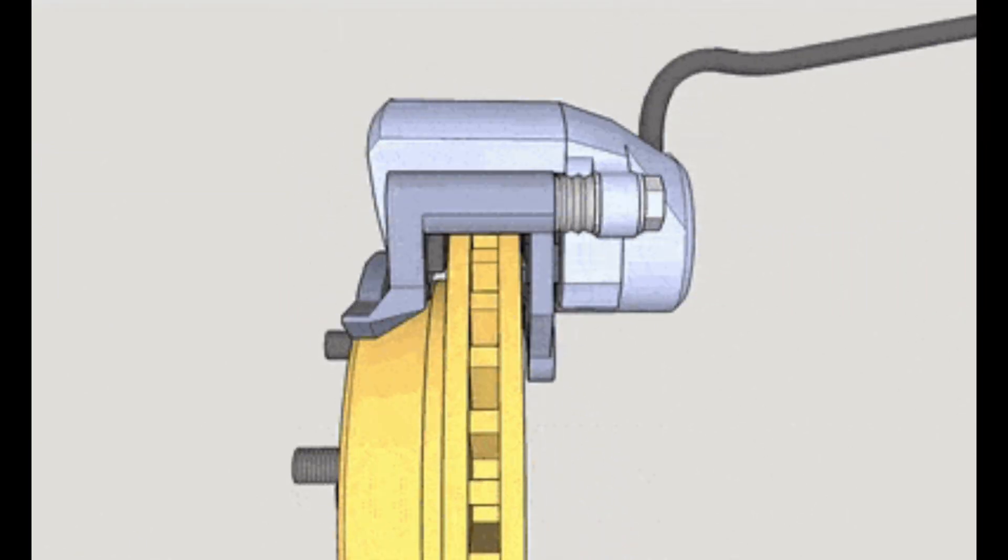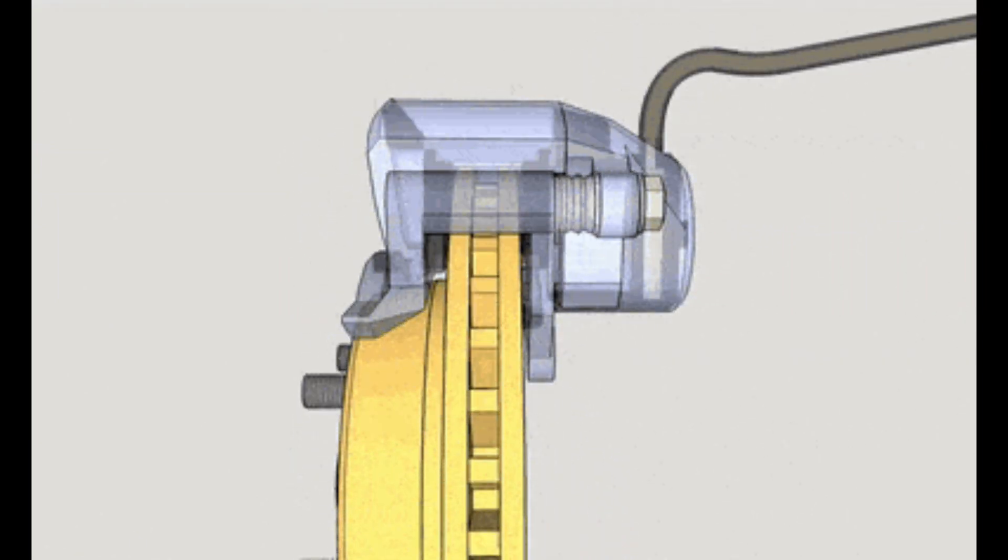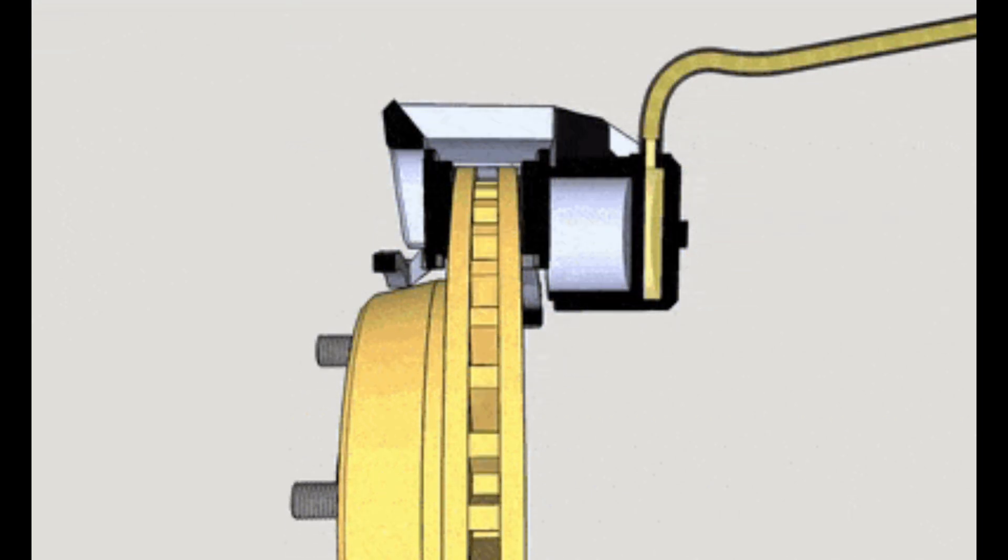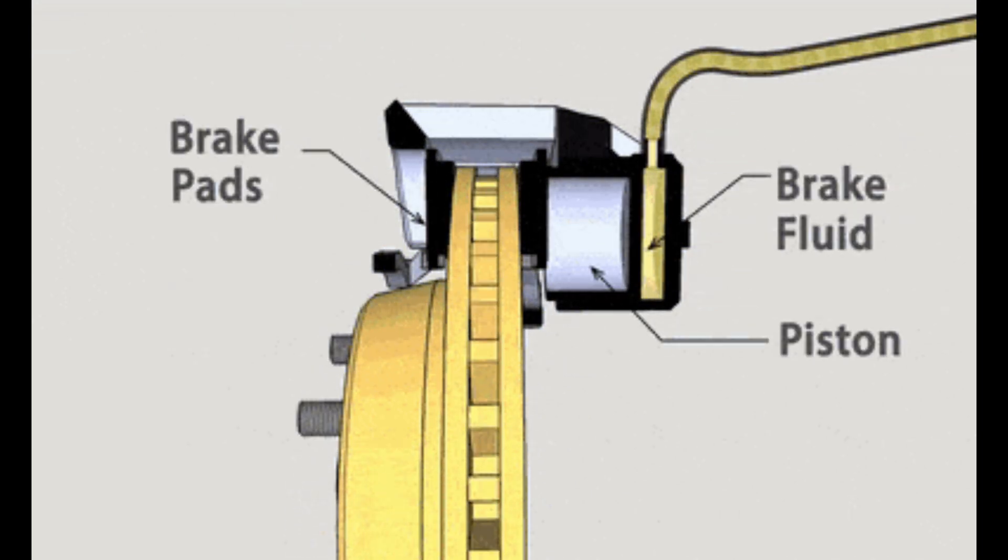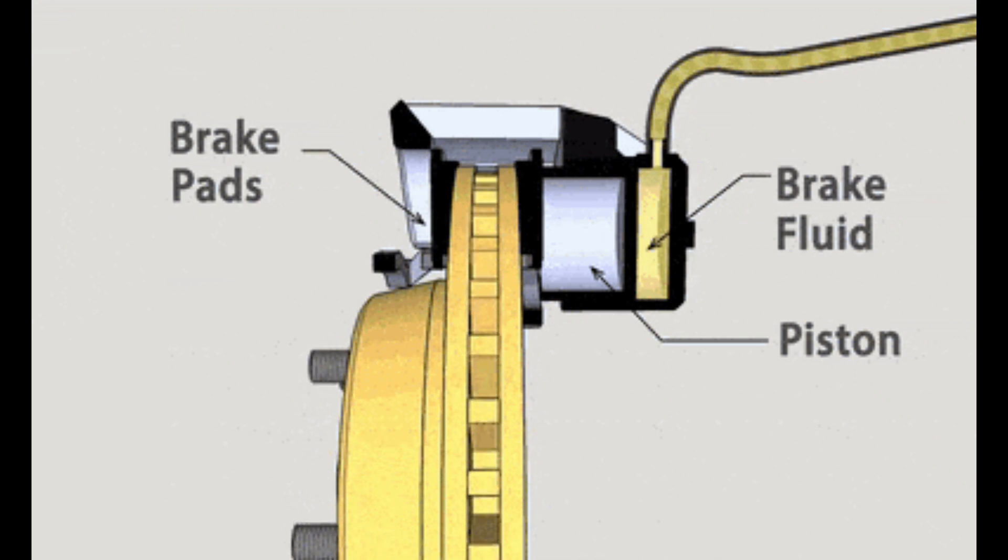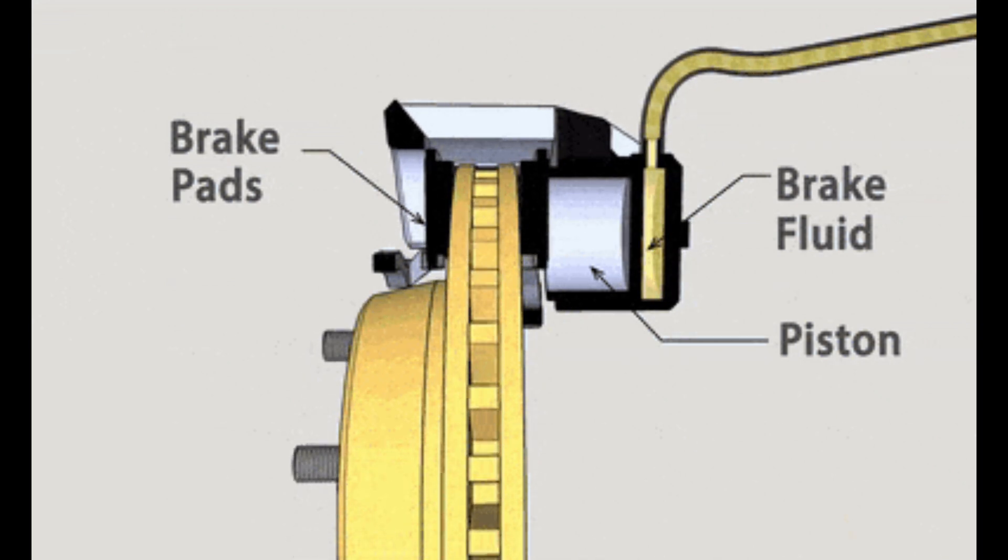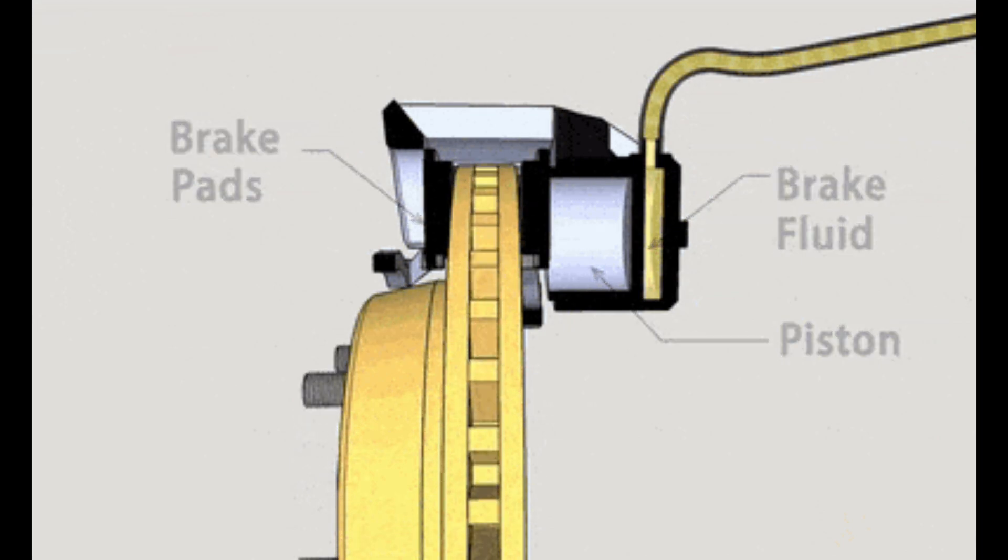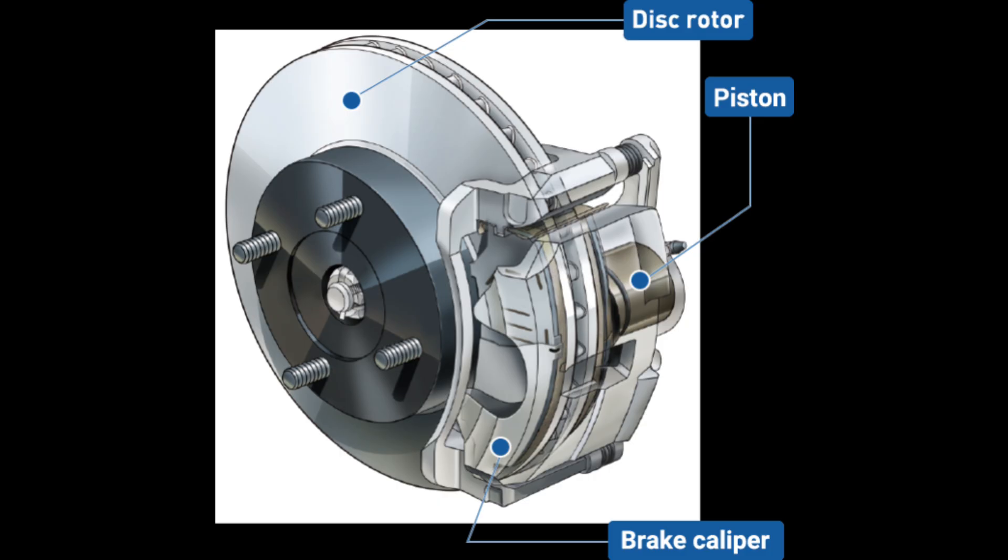How Disc Brakes Work. Disc brake construction: The brake rotor disc, which rotates with the wheel, is clamped by brake pad friction material fitted to the caliper from both sides with pressure from the piston's pressure mechanism, decelerating the disc rotation, thereby slowing down and stopping the vehicle.